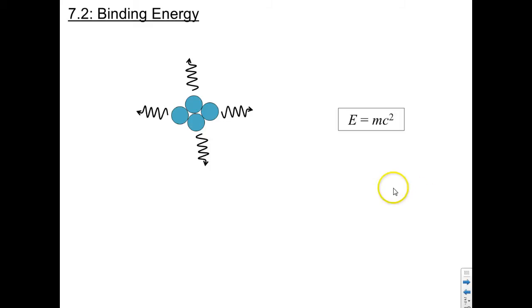But as Einstein famously discovered, energy is equivalent to mass. That means if these nucleons emit light, then they've just lost some energy. And because they've lost energy, they've also lost mass.